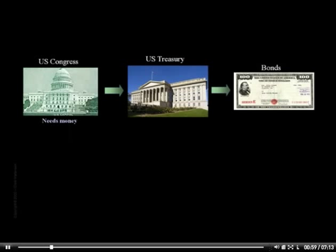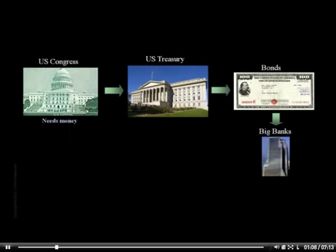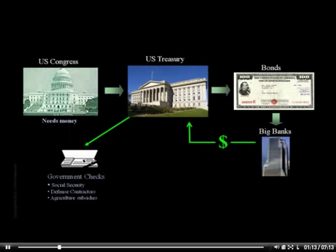Treasury bonds are sold regularly in auctions, and it's safe to say that the majority of these bonds are bought by big banks, such as those of China and Japan recently. At auction, the banks purchase these bonds, and then money gets sent into the Treasury coffers, where it can be dispersed for the usual array of government programs.